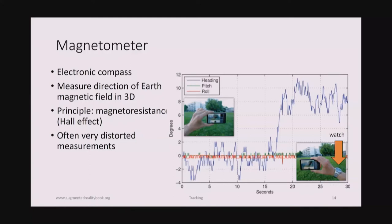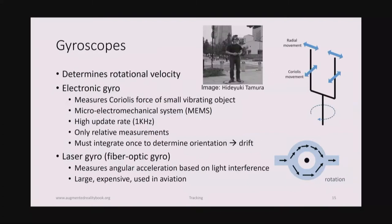A magnetometer, or electronic compass, measures the direction of the Earth's three-dimensional magnetic field — typically using the Hall effect — giving a global orientation. Most of the time you're only interested in bearing (north/south), with the other two DOF estimated relative to gravity. However, the magnetometer has a big drawback: it's very susceptible to electromagnetic interference. In an experiment, simply switching a metallic watch from one hand to the other caused over 10 degrees of arc error.